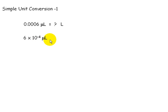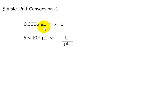Now what we do is we put a times here in our conversion. We look at the unit that we want, which is liters — that goes on top. The unit that we have, microliters, goes on the bottom.